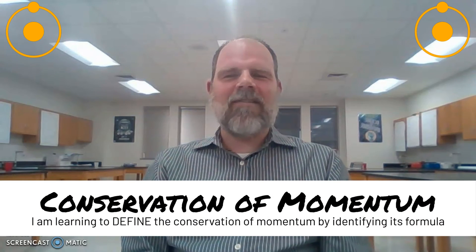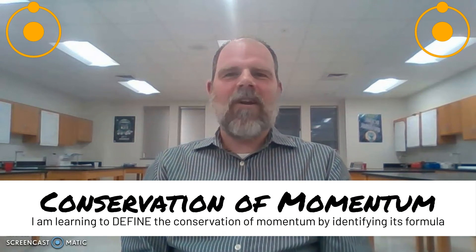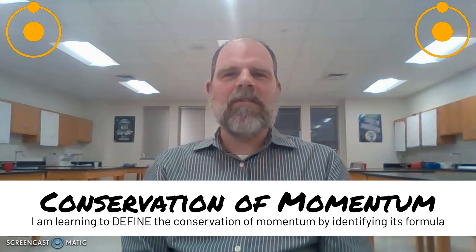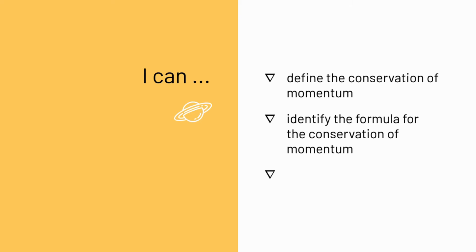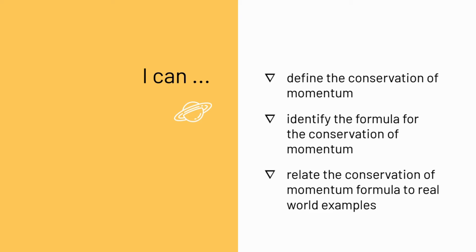This is the video lesson for Conservation of Momentum. The learning target for this lesson is: I am learning to define the conservation of momentum by identifying its formula. The success criteria are: I can define the conservation of momentum, I can identify the formula for the conservation of momentum, and I can relate the conservation of momentum formula to real world examples.